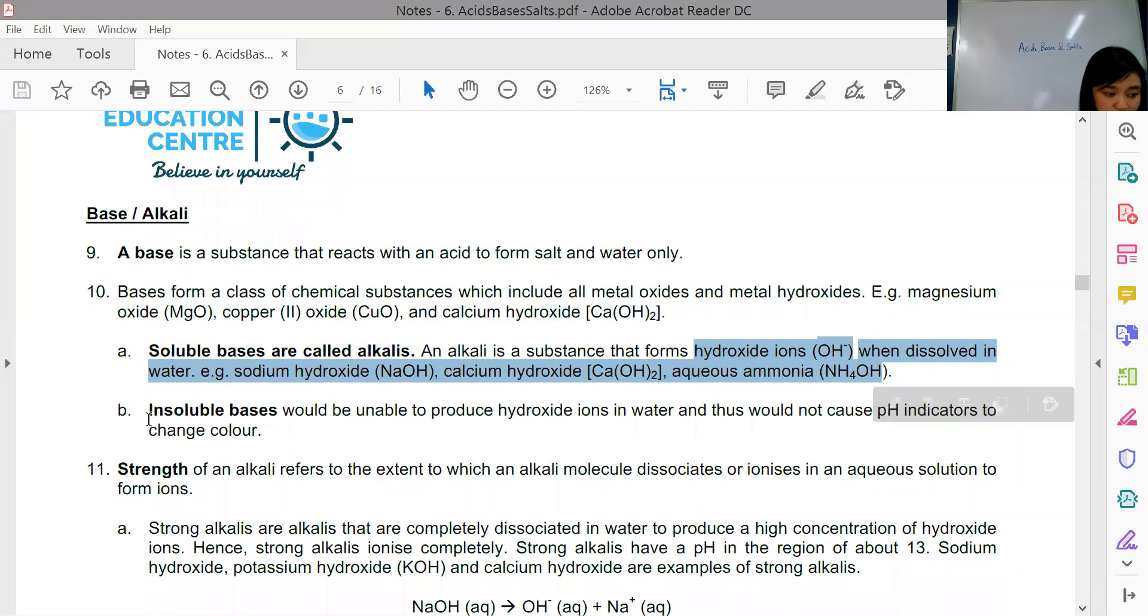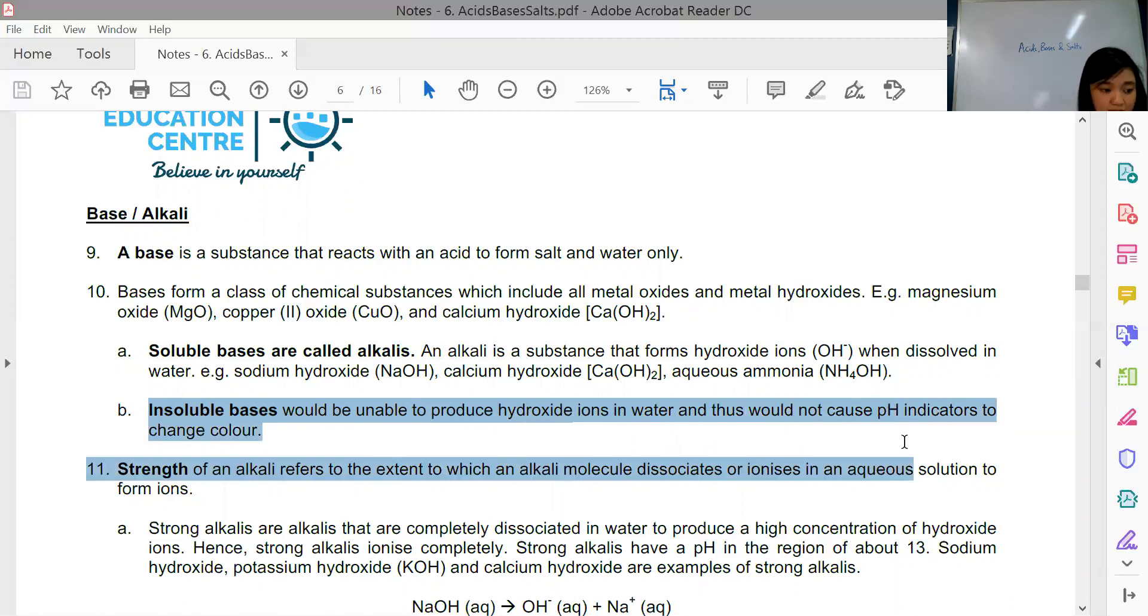For insoluble bases, they are unable to produce hydroxide ions in water and thus would not cause pH indicators to change color. The examples usually are metal oxides.